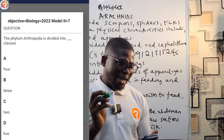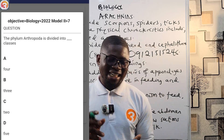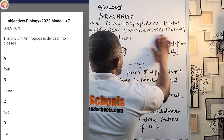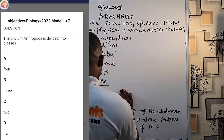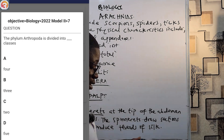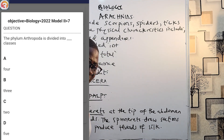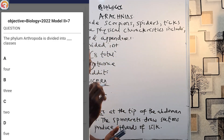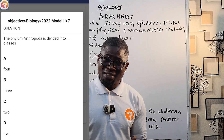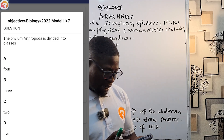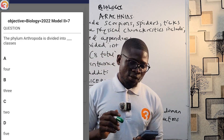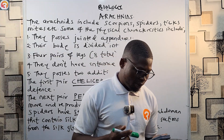A 2022 question asks: 'The phylum Arthropoda is divided into how many classes?' We discussed five classes: Crustacea, Insecta, Arachnida, Myriapoda, and Chilopoda. So the correct answer is D — five classes. Go back and watch that video if you haven't seen it.